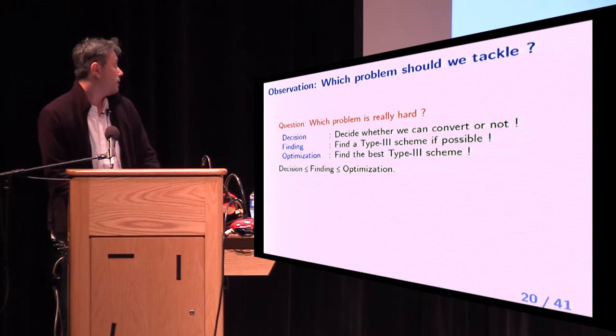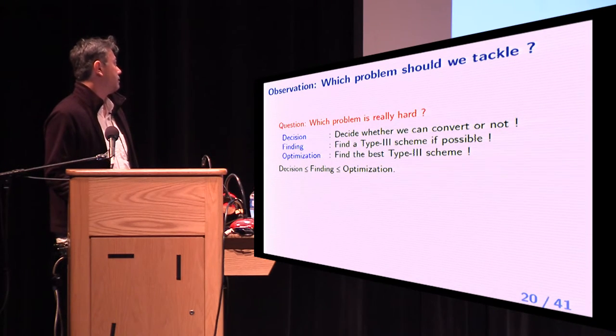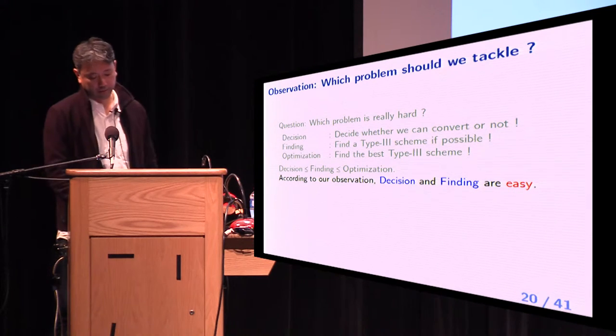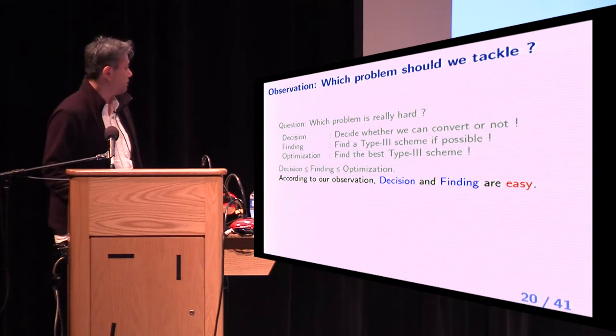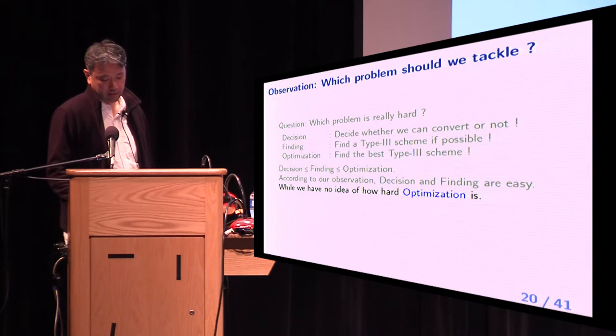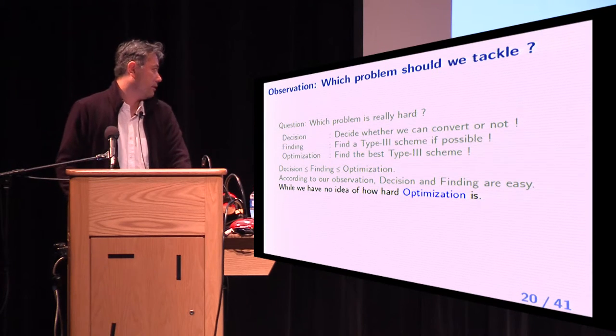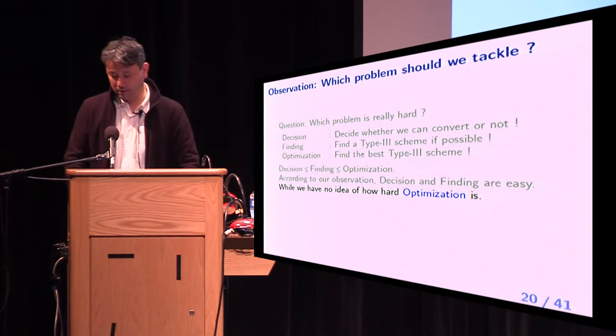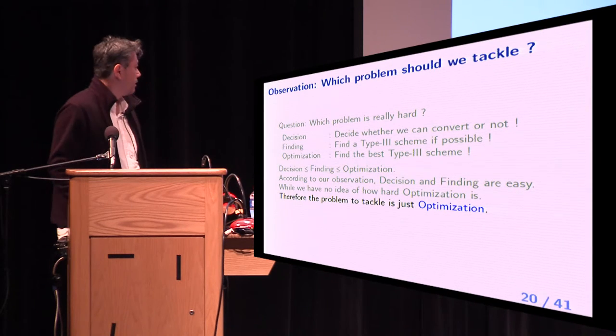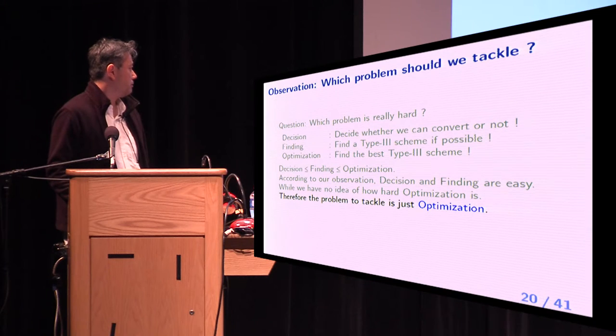Now we go back to the previous question. Which problem is really hard? According to our observation, decision and finding are easy. Why? We have no idea of how hard optimization is. This is my answer. Therefore, the problem to tackle is just optimization.